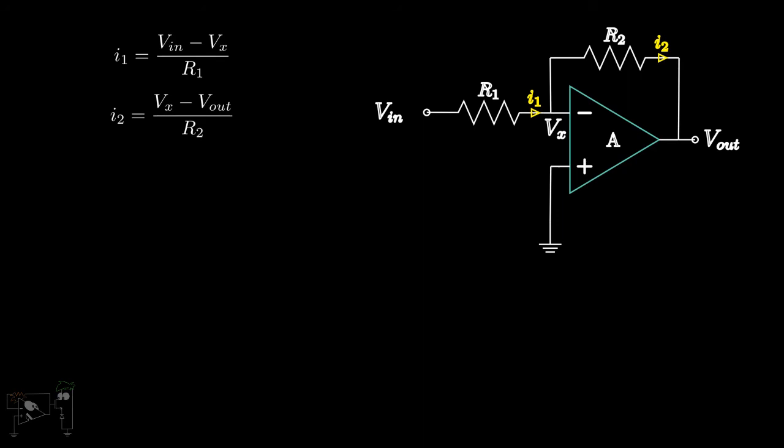Moreover, by the basic amplifying action of the op-amp, Vout will be the open-loop gain A into the differential input voltage, which is simply 0 minus Vx. So the output will be minus A Vx, or Vx is minus Vout by A.